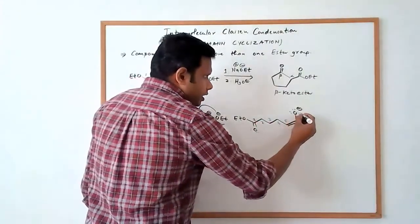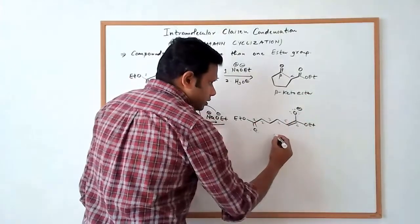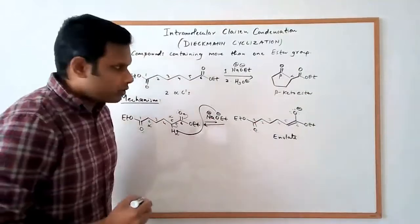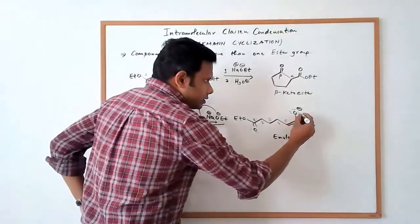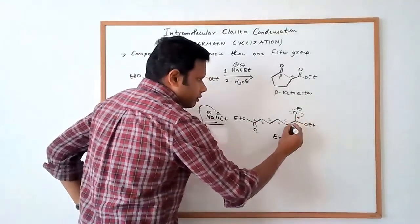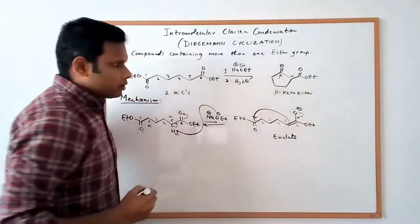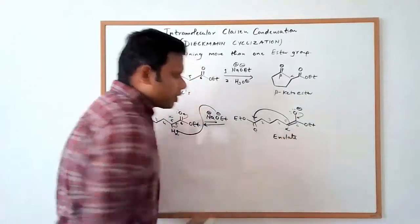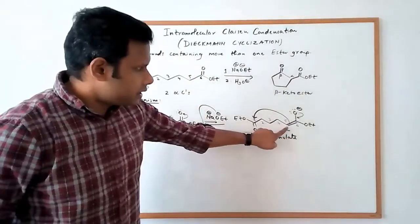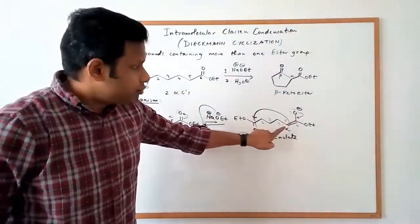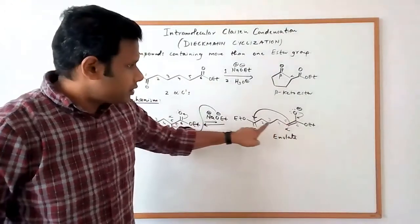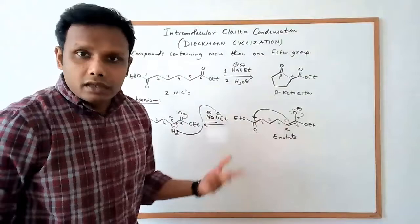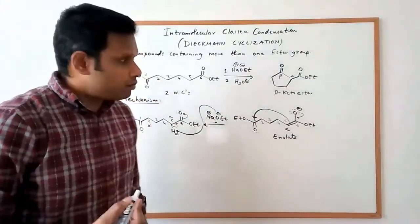And then when the enolate is formed, this enolate is a carbon nucleophile. So as the lone pair comes down, the pi bond can go and attack carbon 1. So carbon 5 is the alpha carbon. And essentially we are making a bond between the fifth carbon and the first carbon. So 1, 2, 3, 4, 5. That would give us a six-membered ring.